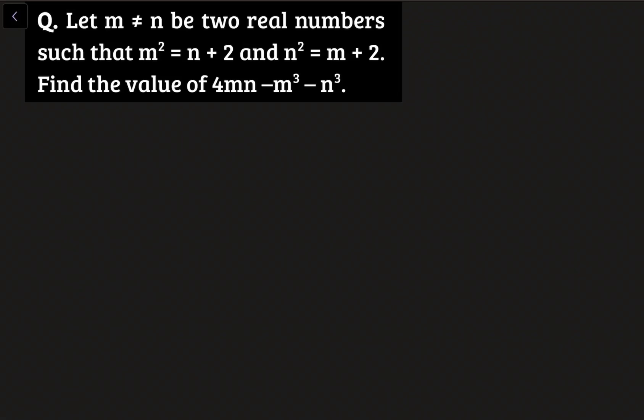Hello friends, Sahil here. Today we have this question. This question is being taken from Singapore Mathematics Olympiad 2006. Now let's see the question. It says that let m is not equal to n be two real numbers such that m² = n + 2 and n² = m + 2. We need to find the value of this expression: 4mn - m³ - n³.